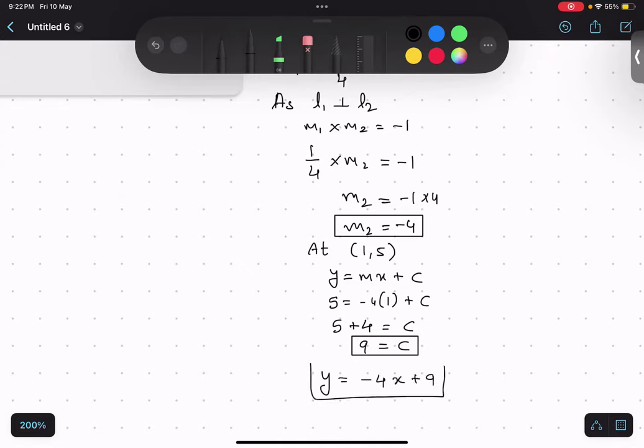So, this is our required equation, the perpendicular line equation. Any doubt in this? Similar steps, the way we did for parallel lines. First step is to find slope, that is m1.